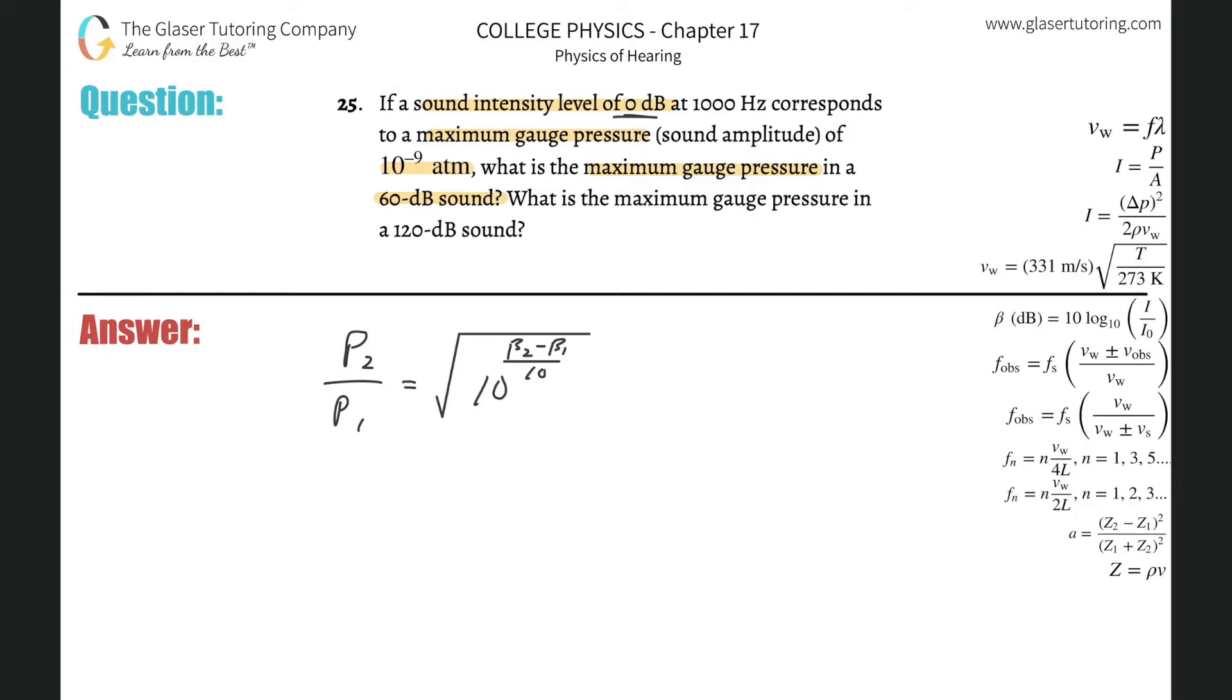They're telling us that a sound intensity level of 0 decibels, so we can call it a beta 1 value. Let's call beta 1 equal to 0 decibels. And they're saying that corresponds with a pressure of 10 to the minus 9, so this is simply going to be 10 to the minus 9. This would be p1, 10 to the minus 9 atmospheres.